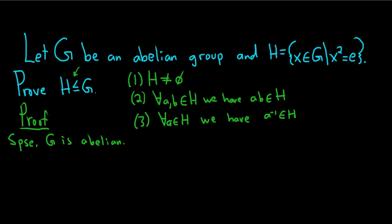First, let's explain why H should be non-empty. We need an element such that x squared equals e — that's what it means to be in H. The easiest element we can think of is e. Note: e squared, by definition of powers, is simply e times e. And because e is the identity, you just get e when you multiply e times e. So e squared is equal to e, which means that e is an element of H.